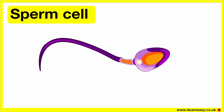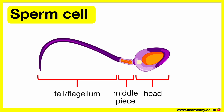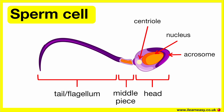Sperm cell. Now let's look at the different parts of a sperm cell: the head, the middle piece, the tail or flagellum, the acrosome, the nucleus, the centriole, and the mitochondria.